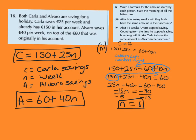After 11 weeks Alvaro stopped saving. Counting from the time he stopped saving, how long will it take Carla to have the same amount as Alvaro in her account? What we can do here is use this little formula again. Most of you probably popped 11 into Alvaro's formula, found out what his total was, and then substituted n into Carla's formula to see when Carla would have the same amount.